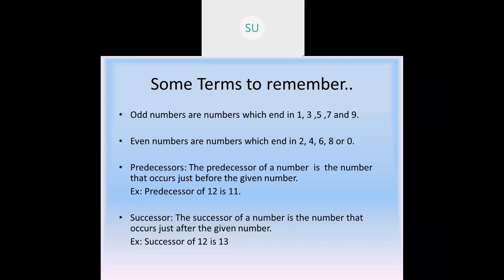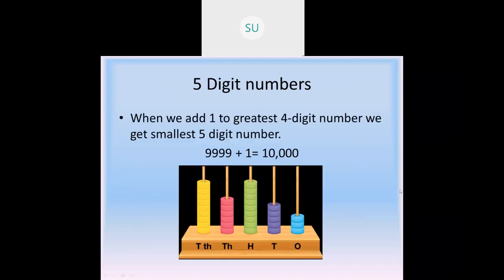The successor is the number that comes after the given number, so for 21 the successor will be 22. For five digit numbers: when you add one to the greatest four digit number, 9999, you get ten thousand, which is the smallest five digit number. A five digit number has five places: ones, tens, hundreds, thousands, and ten thousands.